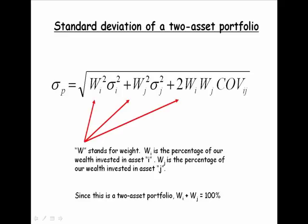Let's make sure we understand all the variables. W stands for weight—it is the percentage of our wealth invested in each asset. W sub J is the percentage of our wealth invested in asset J. W sub I is the percentage of our wealth invested in asset I.